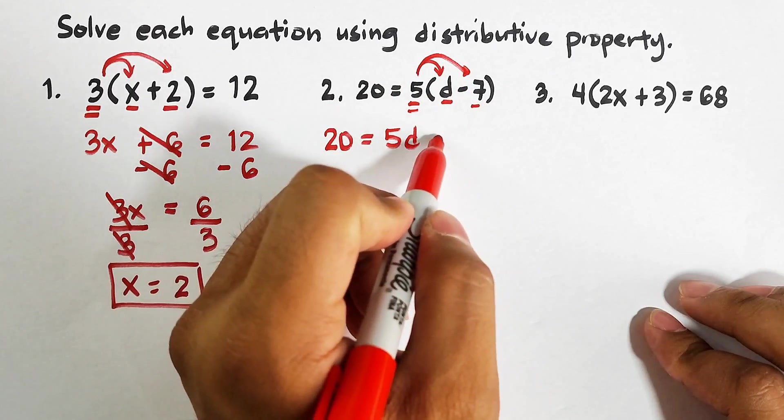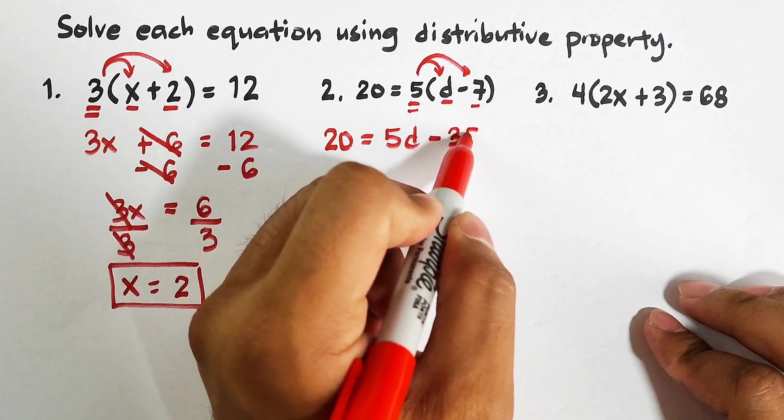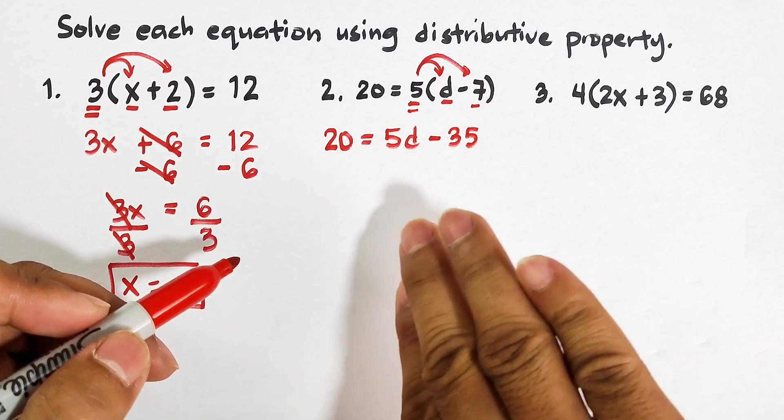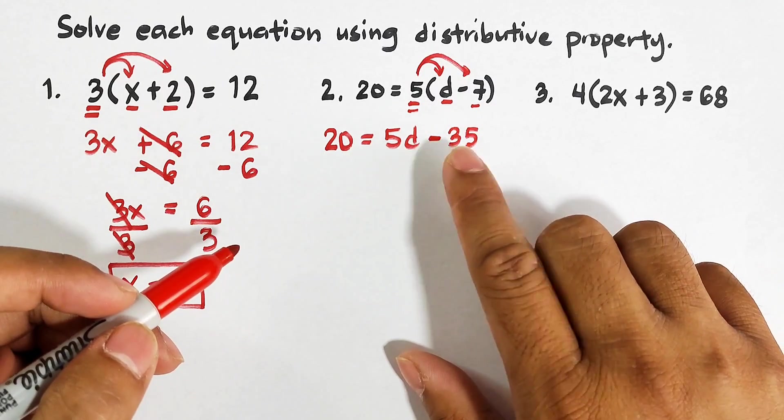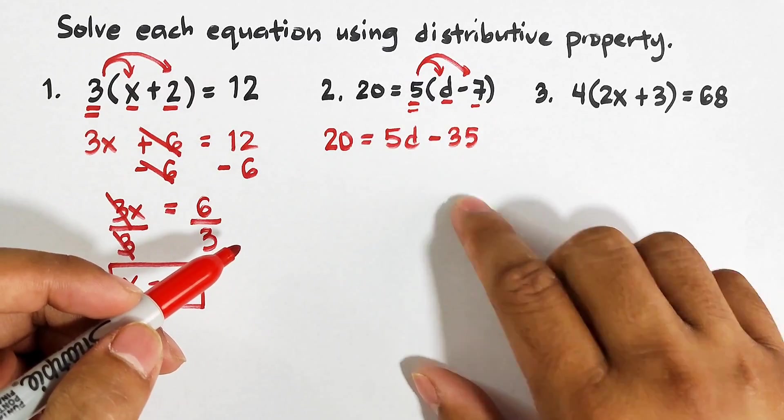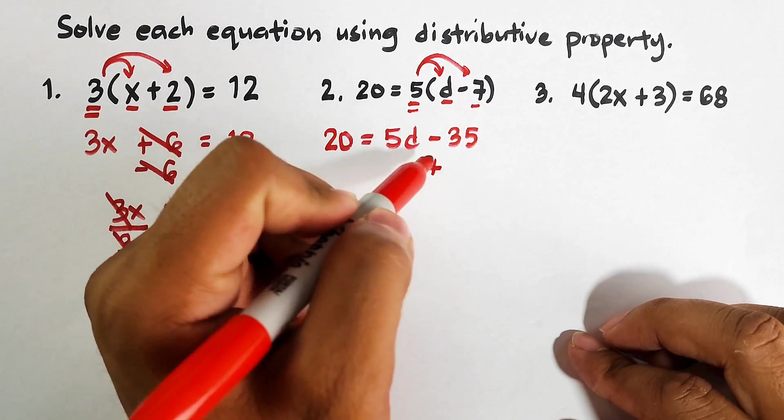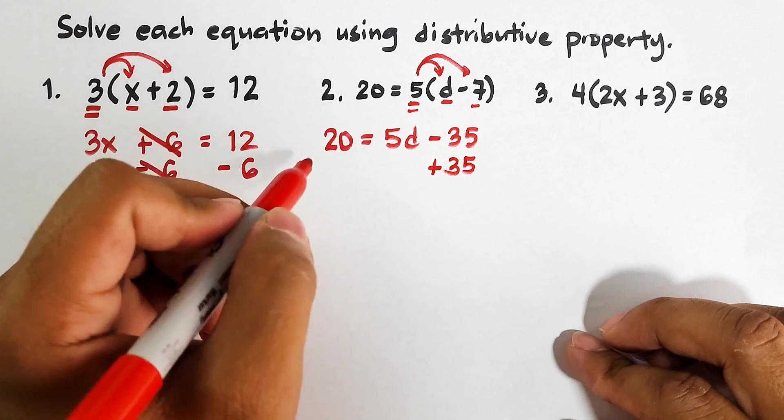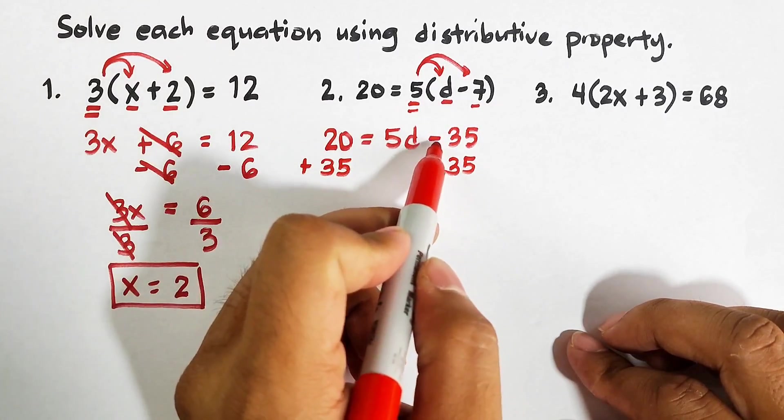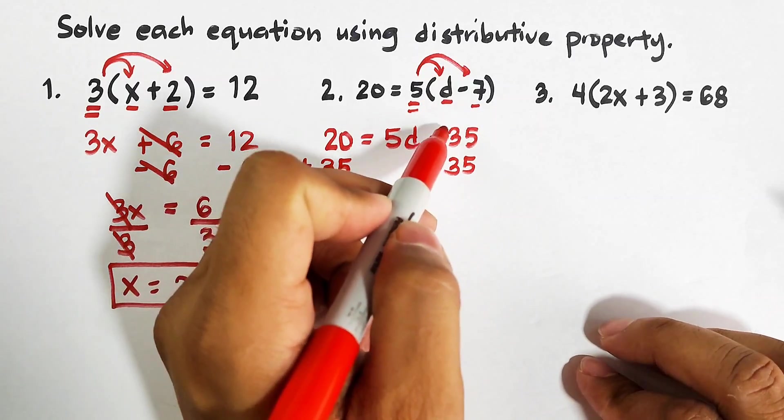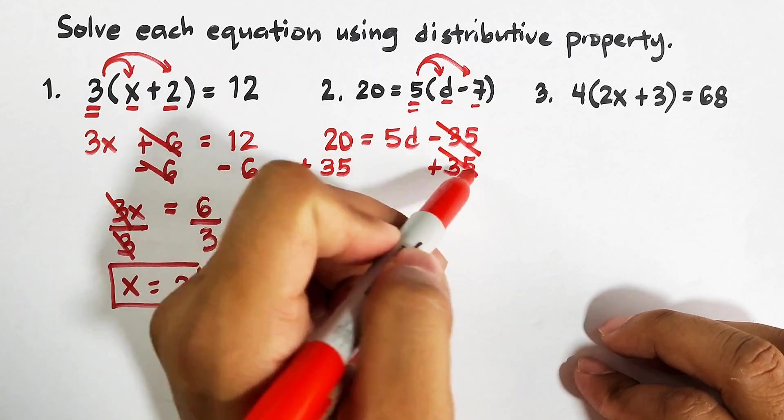Now as you can see, the variable d is on the right side of the equation. So what we need to do is to eliminate negative 35. How? By simply adding both sides of the equation by 35. So this is negative 35 plus 35, that will be 0. We can just cancel this out.